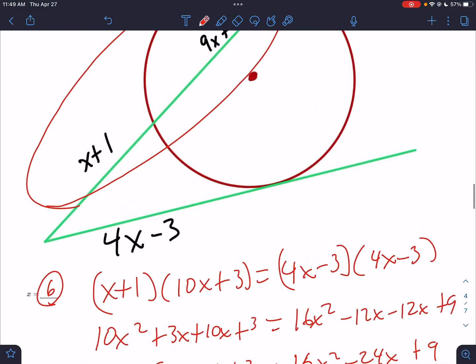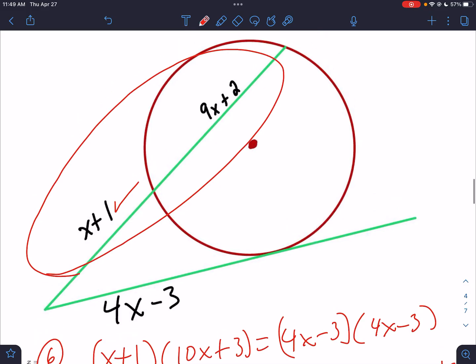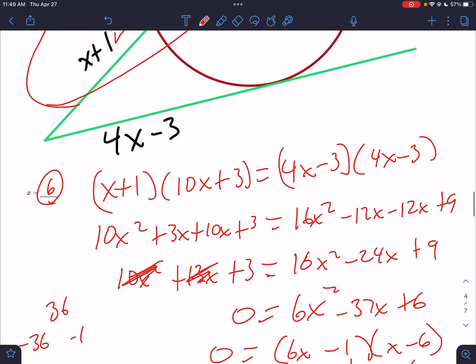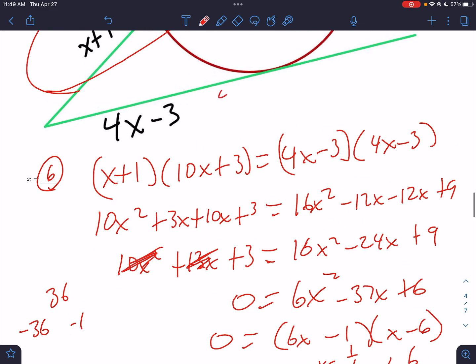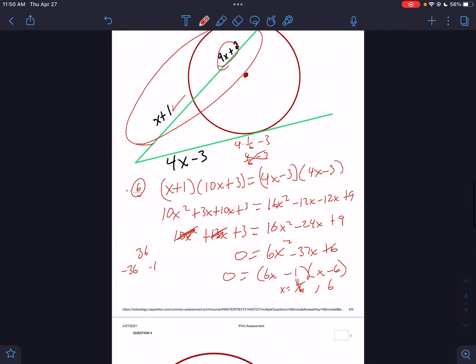But I need to test them out. Do they both work? If I plugged in 1/6, it would be fine—all positive. But what about here? This is basically 4 times 1/6 minus 3. Well, 4 times 1/6, that's 4/6 minus 3, that's going to be negative. So 1/6 does not work. You have to plug your answers in and test them. 6 is the only number that works.